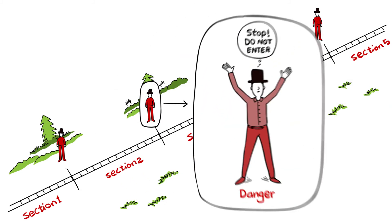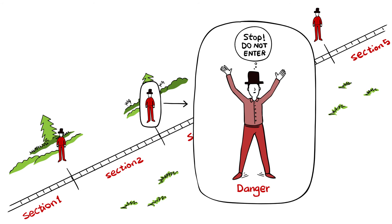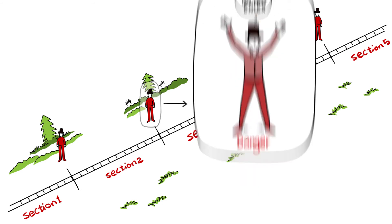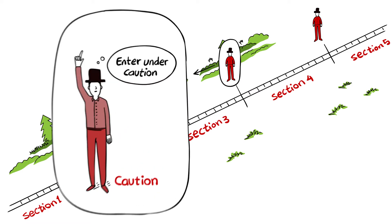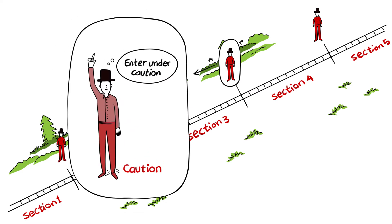The all-right signal indicates the track section ahead is clear to enter. The danger signal indicates the track section ahead is occupied and cannot be entered. The caution signal indicates the train can enter the track section but under caution.